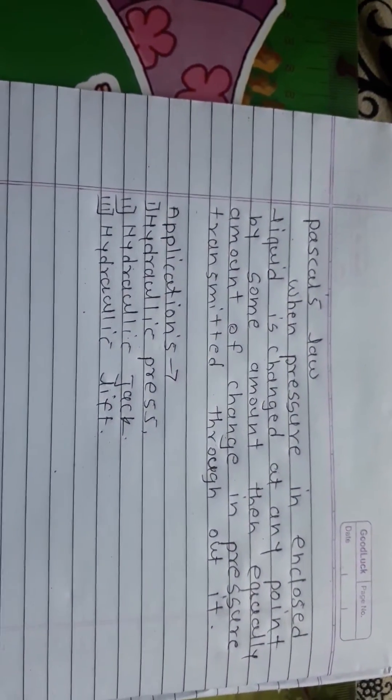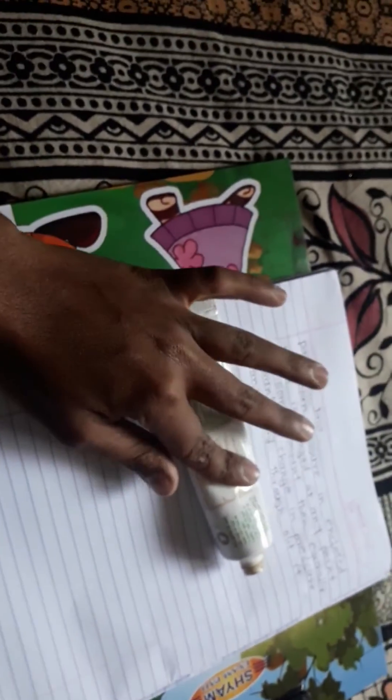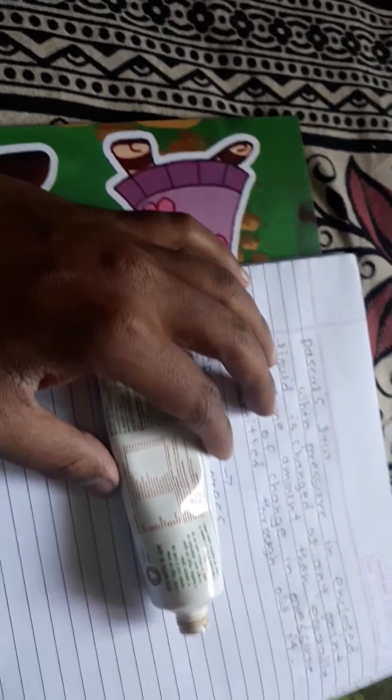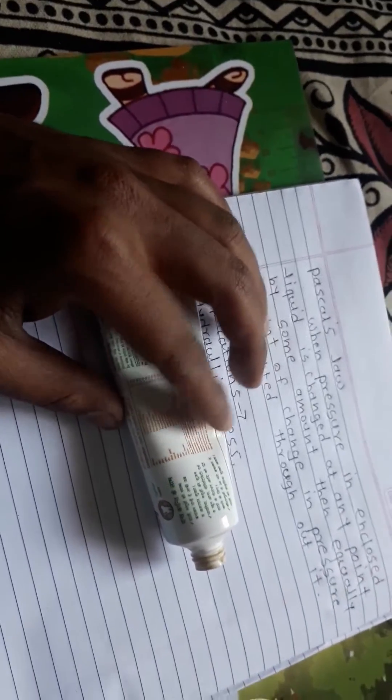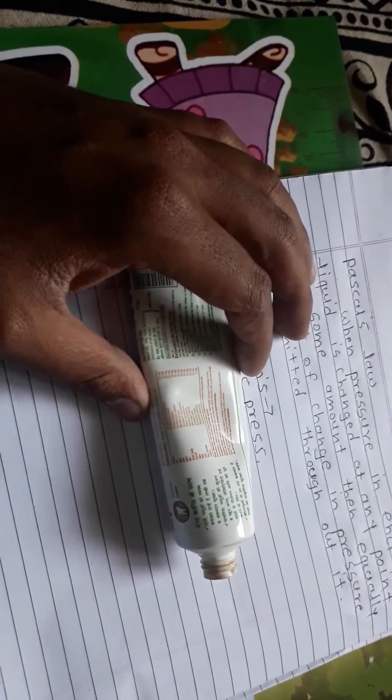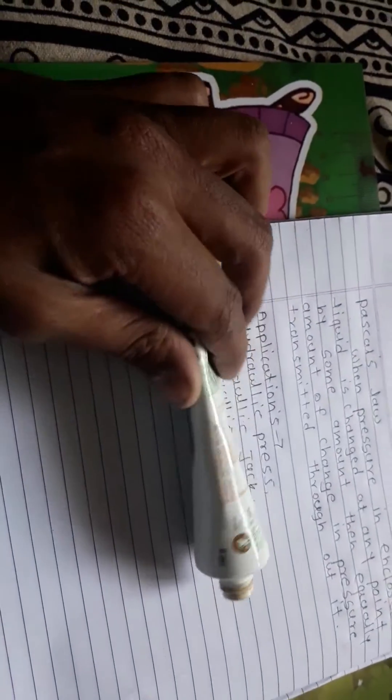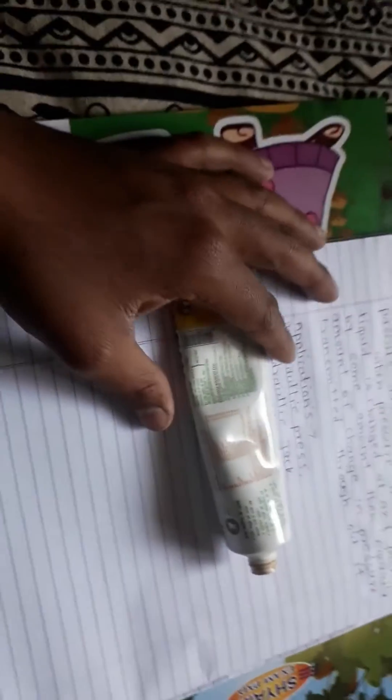So when we use our paste, we use this paste. See that it has a liquid. This is a little high viscosity. Viscosity is high but it is a liquid. The liquid is a substance which has the capacity to flow and it has the capacity to flow.